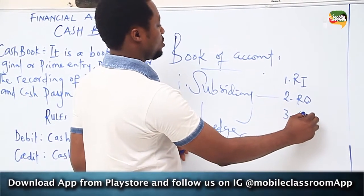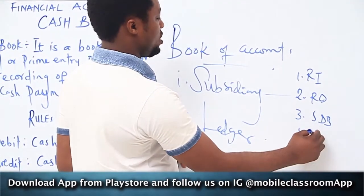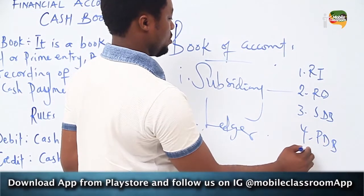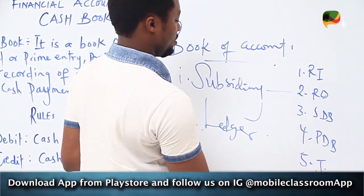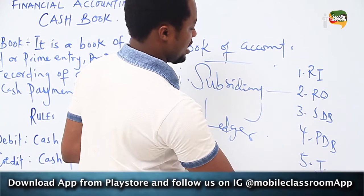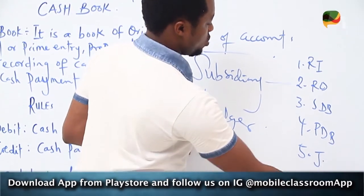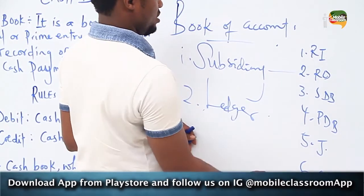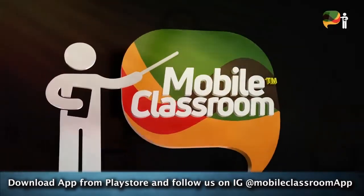The subsidiary books include the sales book, the purchase book, the journal, and the cash book. Today we shall be looking at the cash book.